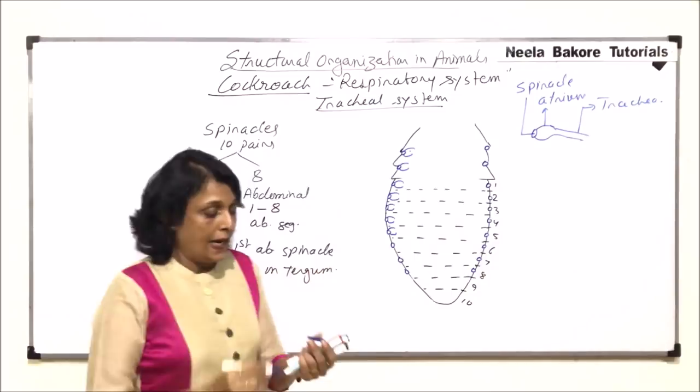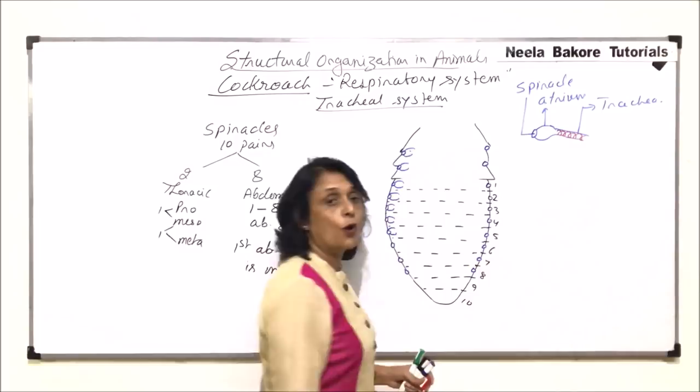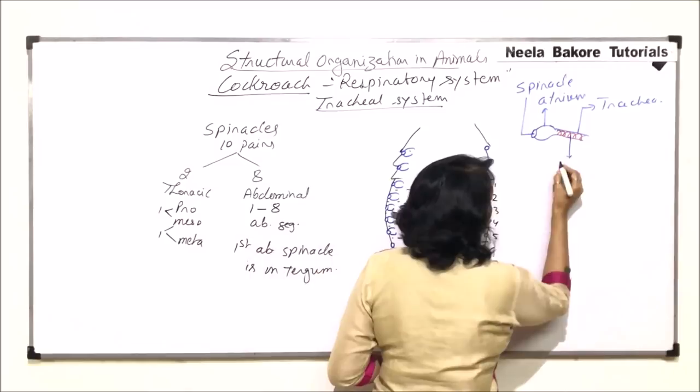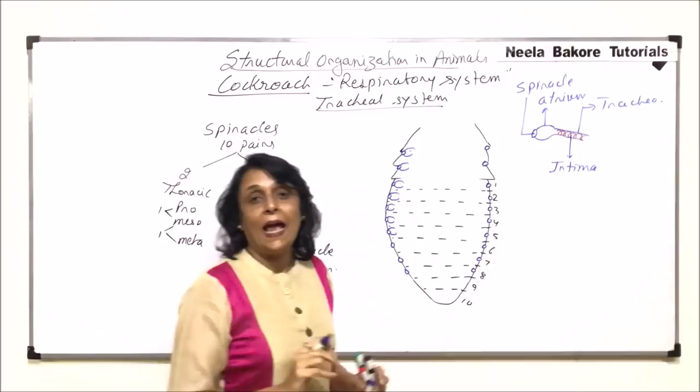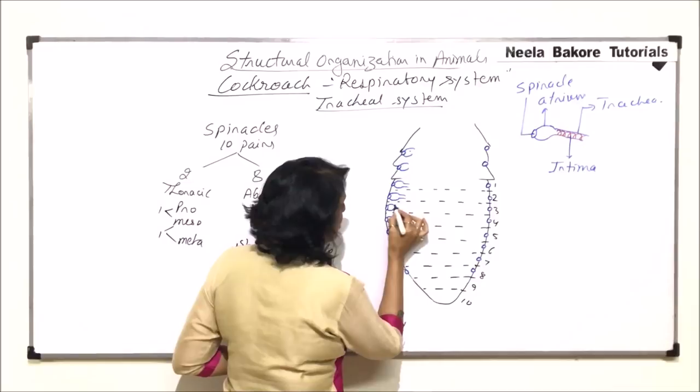Inside the trachea there are some spiral thick rings. This spiral thickening prevents the trachea from collapsing. This spiral thickening is made up of a substance called intima — it is spiral and provides support so that the tracheal tubes do not collapse. Let us draw this tracheal tube part.